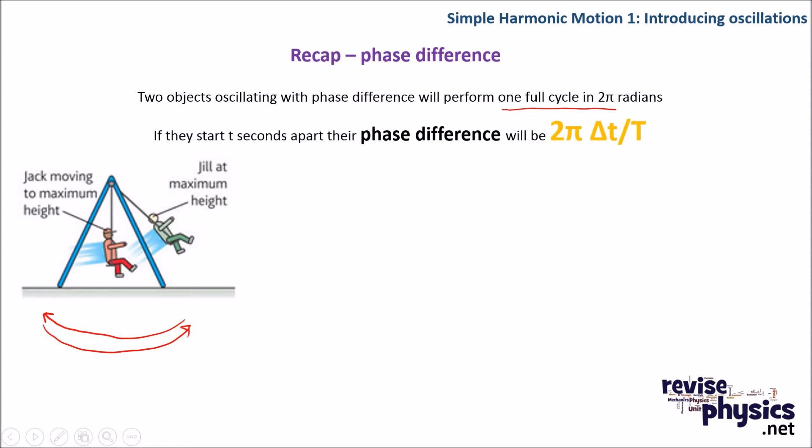Now, if they are t seconds apart, so if Jack started t seconds after Jill from the same initial displacement point, they're going to have a phase difference. They'll be out of phase with each other. And that phase difference is our 2π, one complete oscillation, times the time into the oscillations that we're looking at, divided by the total time taken for one oscillation.